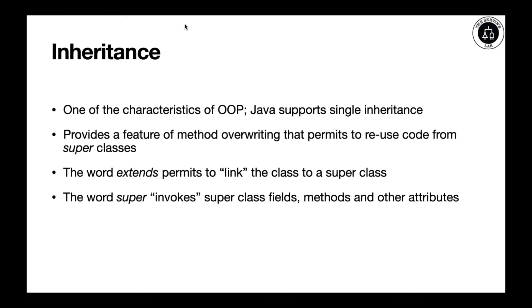One of the characteristics of object-oriented programming is inheritance and it supports the ability to extend certain attributes from a superclass to a lower class. Java supports single inheritance. The idea here is to provide a feature in one superclass and then overwrite it in the subclass that can allow us to reuse code from a superclass.